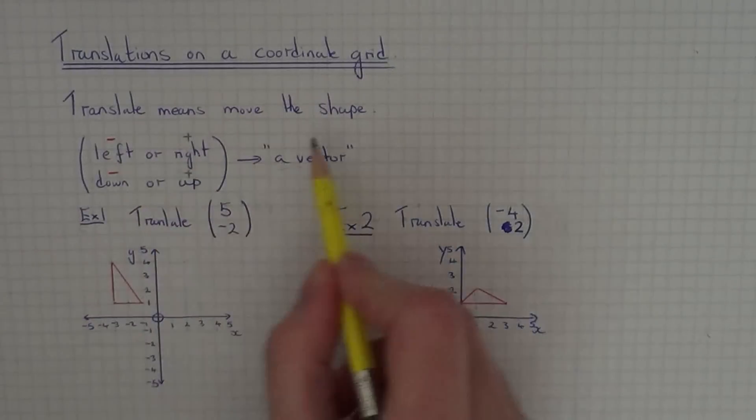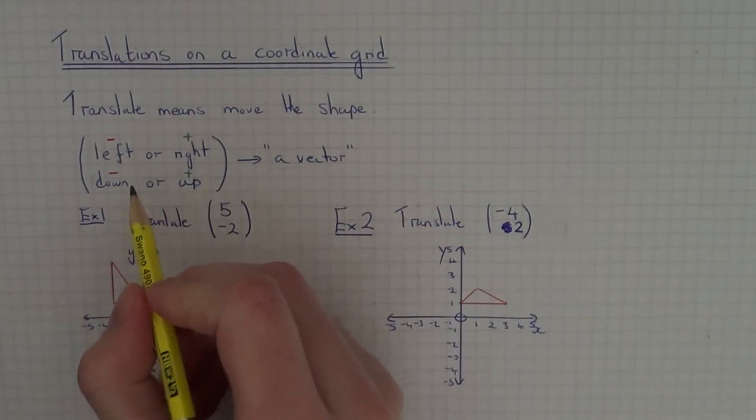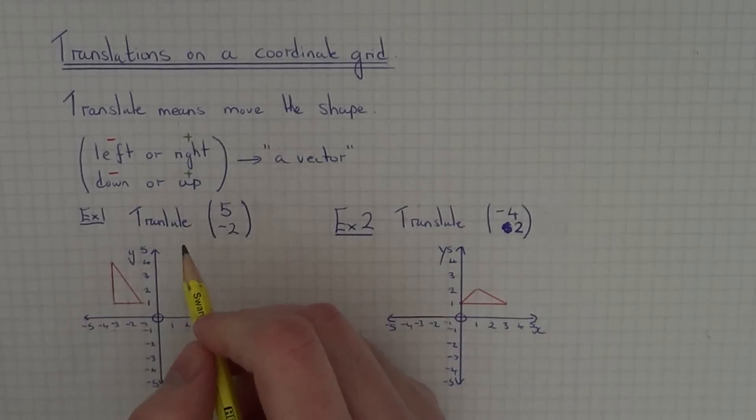Translate means you need to move the shape to a new position on a coordinate grid. Now when you are asked to carry out a translation you will be given a vector. The vector will tell you the directions to move the shape in.